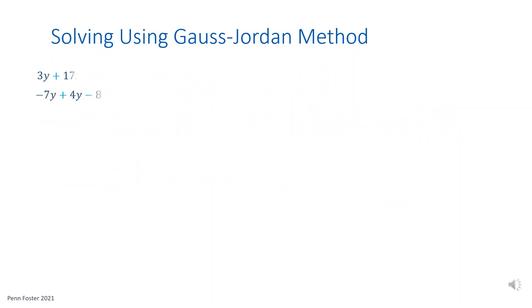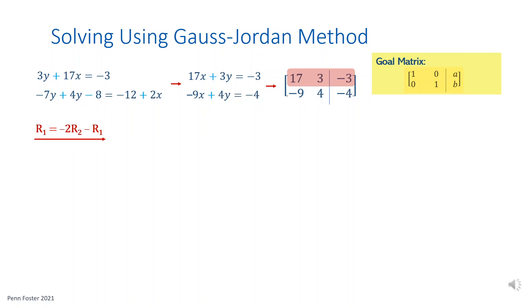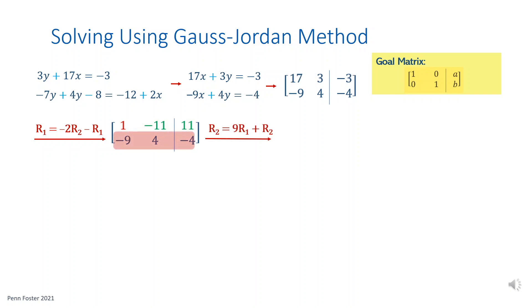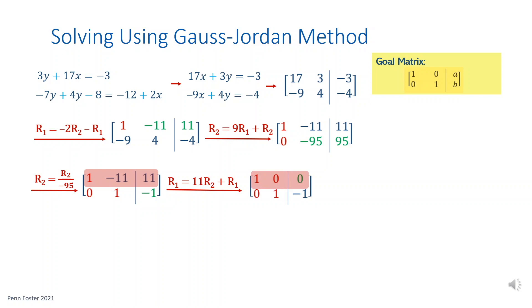For this system, rearrange the second equation to align x and y terms on the left side and constants on the right side. Write out the matrix. To change element 1,1 to 1, multiply negative 2 times the second row, then subtract the product minus the first row. Negative 2 times negative 9 is 18; 18 minus 17 is 1. Apply the same operation to the rest of row 1. Next, change element 2,1 to 0 by multiplying 9 times the first row, then adding the product to the second row. 9 times 1 is 9, then 9 plus negative 9 is 0. Divide the second row by negative 95 to obtain 1 for element 2,2. The final step is to transform element 1,2 to 0 by multiplying 11 times the second row, then adding the product to the first row. x is 0 and y is negative 1.